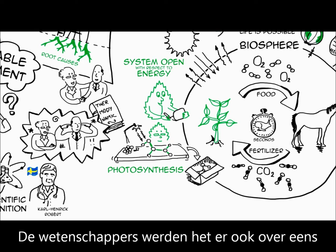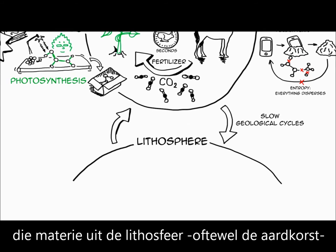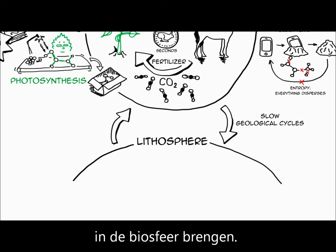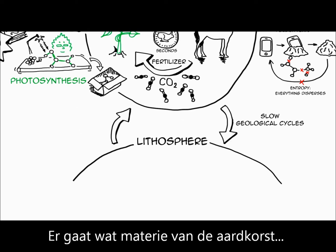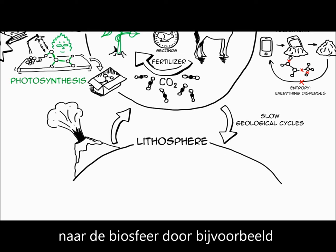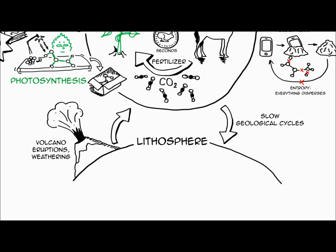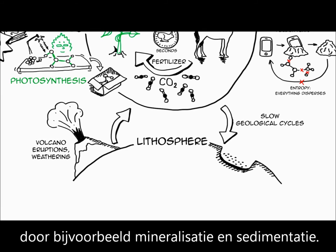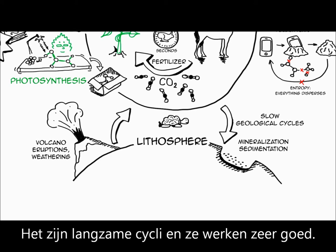The group of scientists also agreed on the fact that there are other cycles — very slow geological cycles — that bring matter from the lithosphere, also called the Earth's crust, to the biosphere. These cycles are also very well balanced. Some matter moves from the Earth's crust to the biosphere through things like volcano eruptions and weathering. And just about the same amount of matter goes back from the biosphere to the Earth's crust via things like mineralization and sedimentation. These cycles take millions of years — they are very slow — and they also work very well.